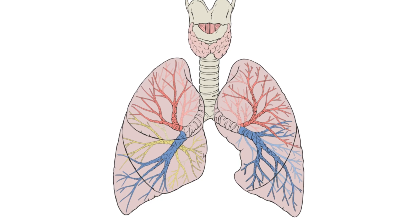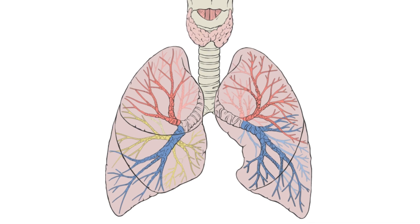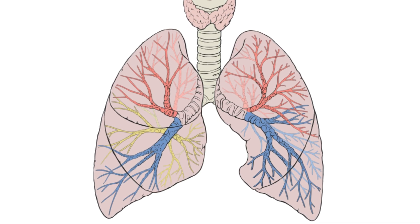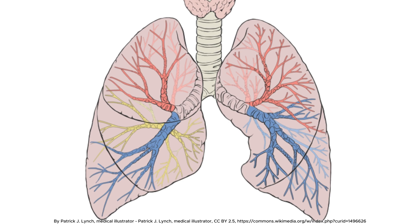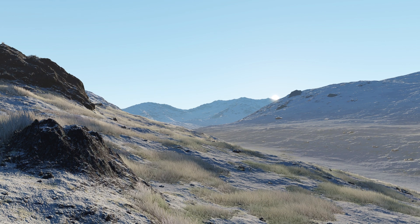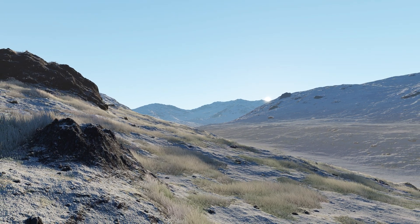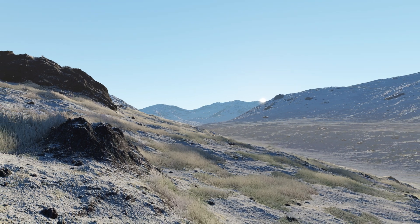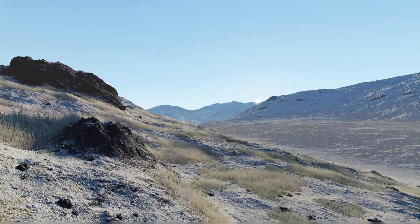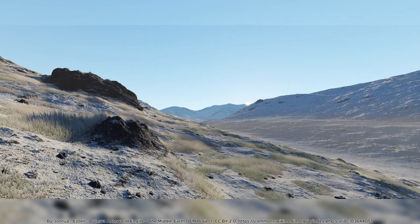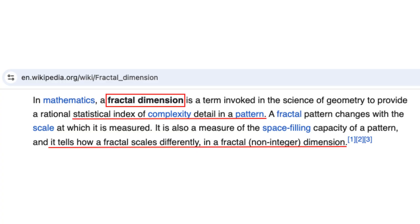In biology, similar fractal patterns appear in the branching of blood vessels and the surface area of lungs and intestines. Computer graphics developers must grapple with choosing appropriate levels of detail when rendering coastlines and terrain in video games and movies.